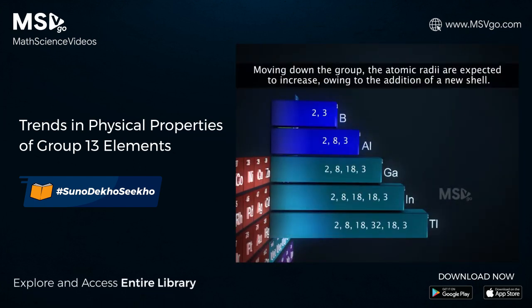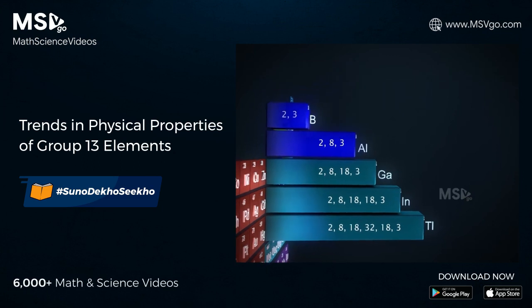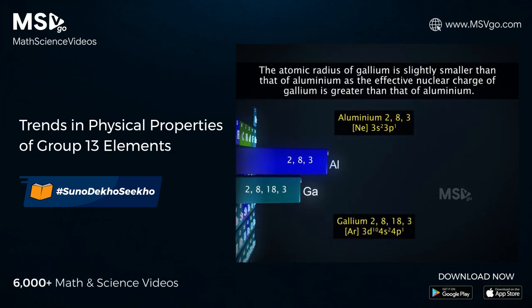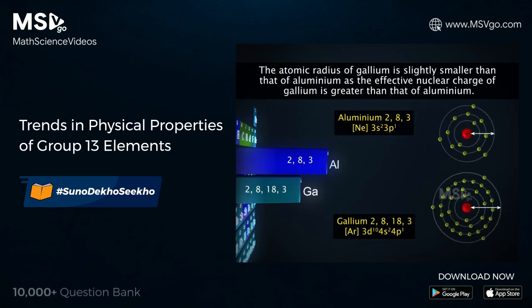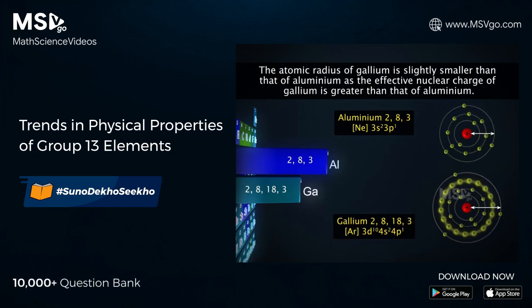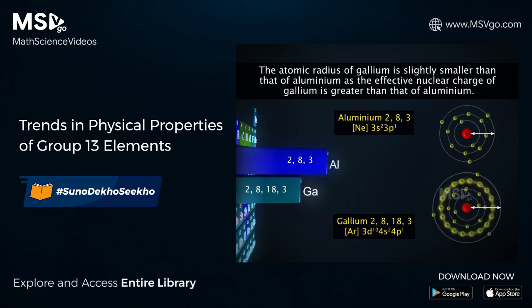Moving down the group, the atomic radii are expected to increase owing to the addition of a new shell. However, the atomic radius of gallium is smaller than that of aluminium. This is due to ineffective shielding of the nucleus by the inner d orbital electrons in gallium. Hence, the effective nuclear charge of gallium is greater than that of aluminium.